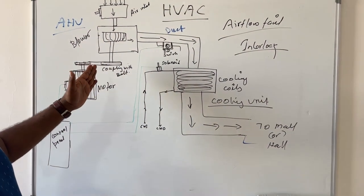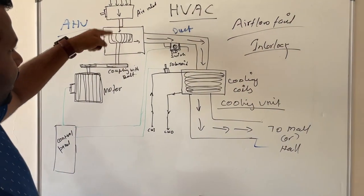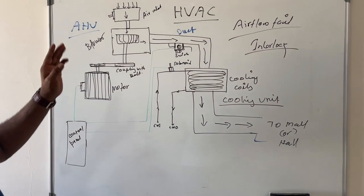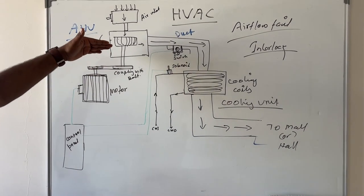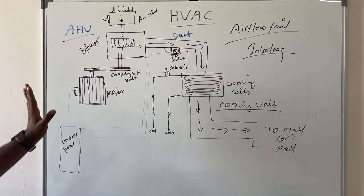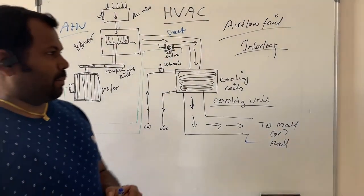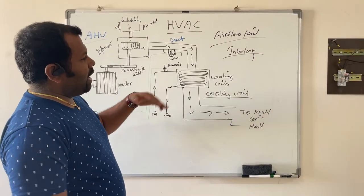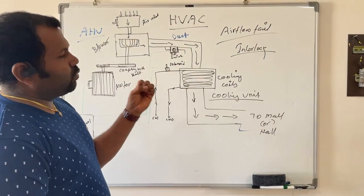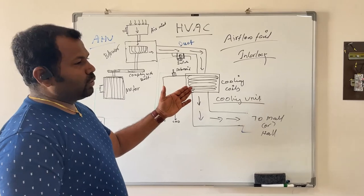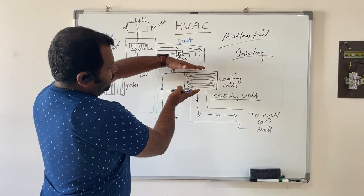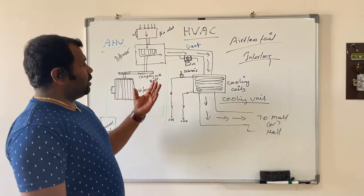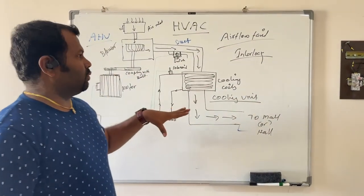The blower is working through the electric motor, sucking air from outside and passing it through the cooling coil. Now if this belt is cut or due to any mechanical reason it is broken, air is not flowing. Still the cooling coils will be cooled by the cooling gas or water, and after a certain time, since air is not passing through, ice will form in this cooling system.